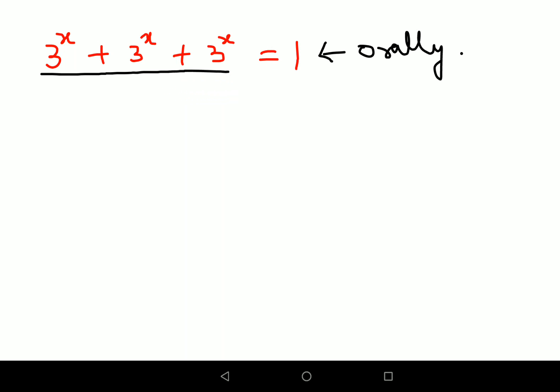In this case, how many 3^x are there? Basically 3 times. So 3 times 3^x equals 1. Now to find the value of x, we'll divide everything by 3. This cancels, and I'm left with 3^x = 1/3.